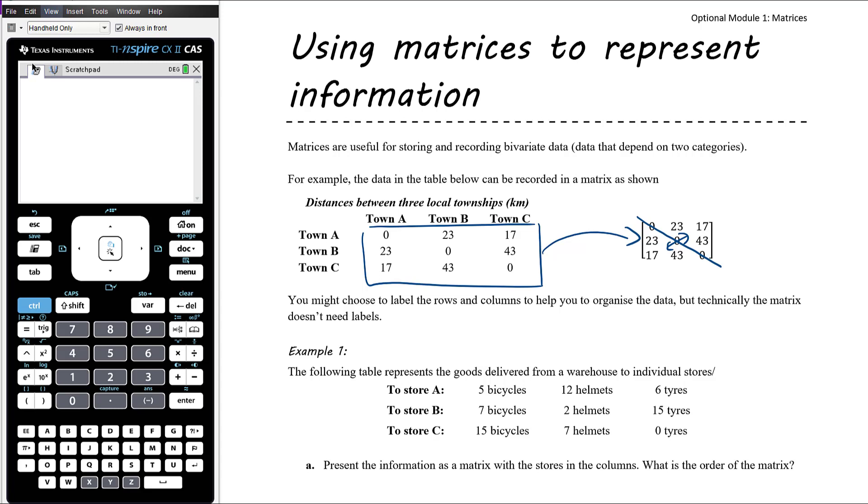And that makes sense in this particular situation because we're talking about distances between three townships. So this number up here, for example, that's the distance between town A and town B. And this number here is the distance between town B and town A. And that's obviously the same value in this particular case, given what we're dealing with. So it's no surprise in this instance that what we have is a symmetric matrix.